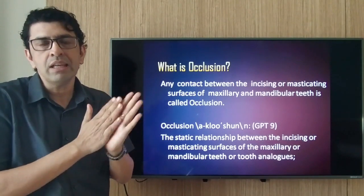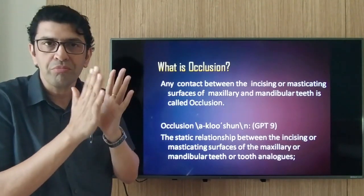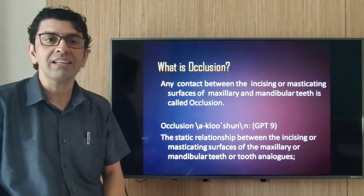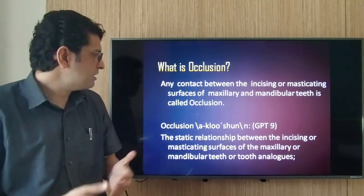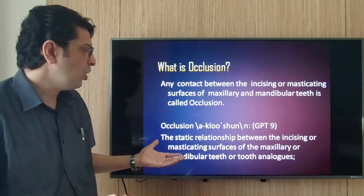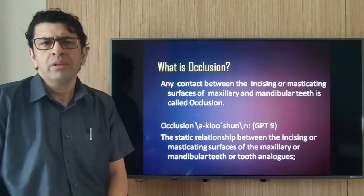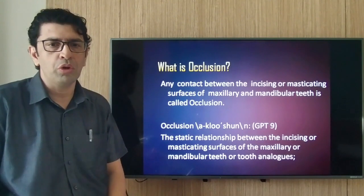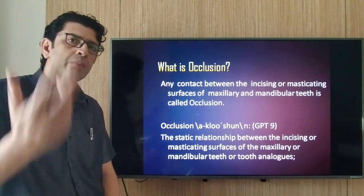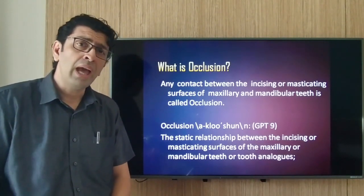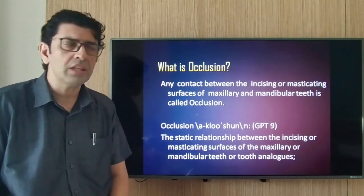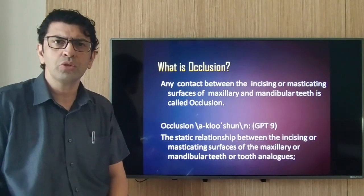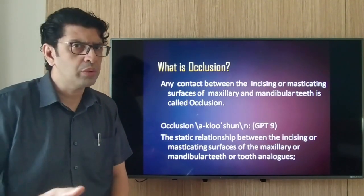Any contact between the incising or masticating surfaces of maxillary and mandibular teeth is called occlusion. The GPT definition states it is a static relationship between the incising or masticating surfaces of maxillary or mandibular teeth or tooth analogs — meaning artificial teeth as well. Before we jump into occlusion, we need to look at some common terminologies and definitions we'll be using in this lecture.